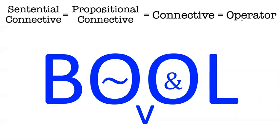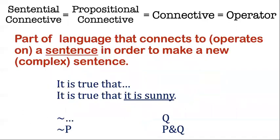Another word for the same thing is operators, because people say that the connectives operate on some inputs, like the atomic sentences. So I will use the words operators, connectives, sentential connectives, all interchangeably. The basic concept here is the idea of a piece of language which operates or works on a kind of input — some other bit of the language.